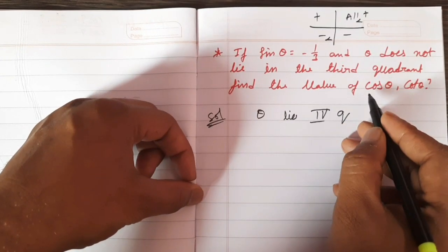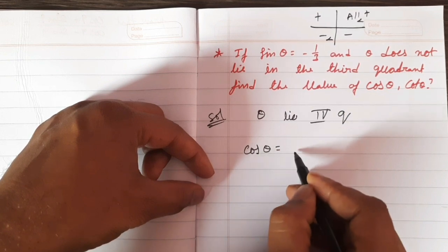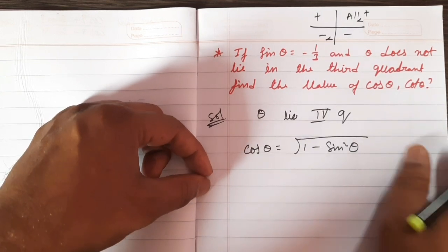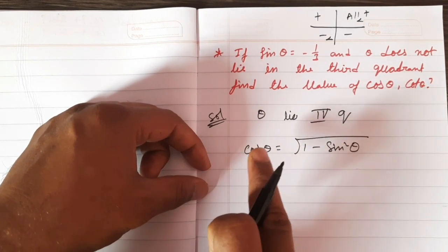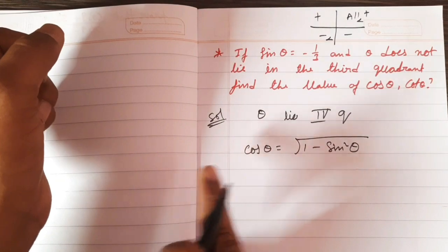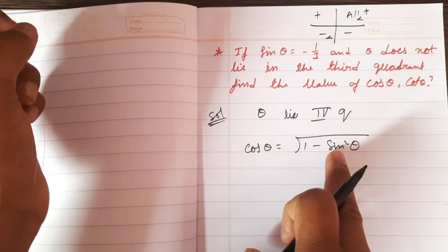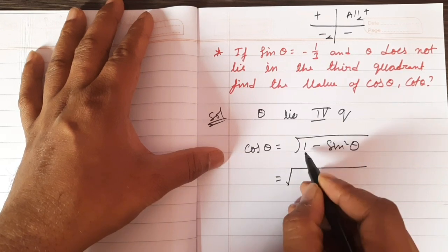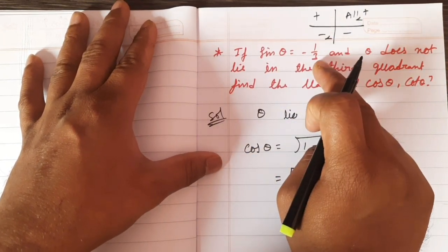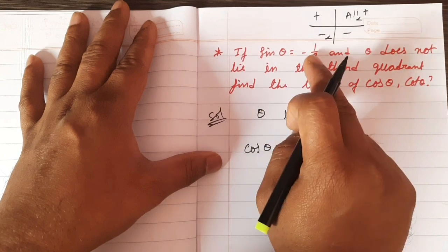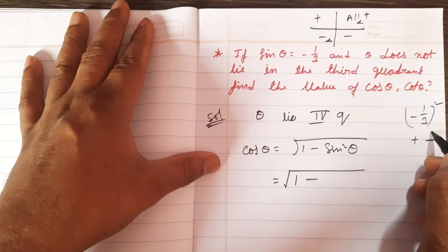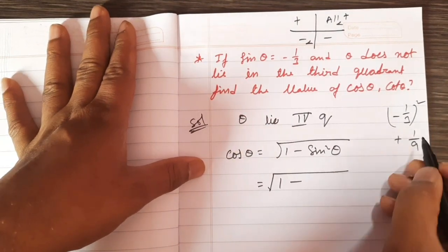So, cos θ is equal to 1 minus sin²θ formula. Okay, cos²θ + sin²θ = 1, so cos²θ is equal to 1 minus sin²θ. So it is equal to 1 minus sin²θ — sin value is minus 1 by 3 — so minus 1 by 3 squared is equal to positive 1 by 9.